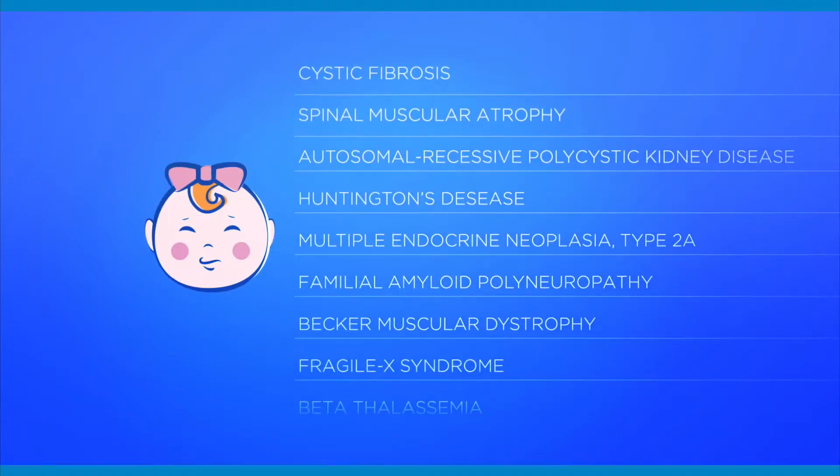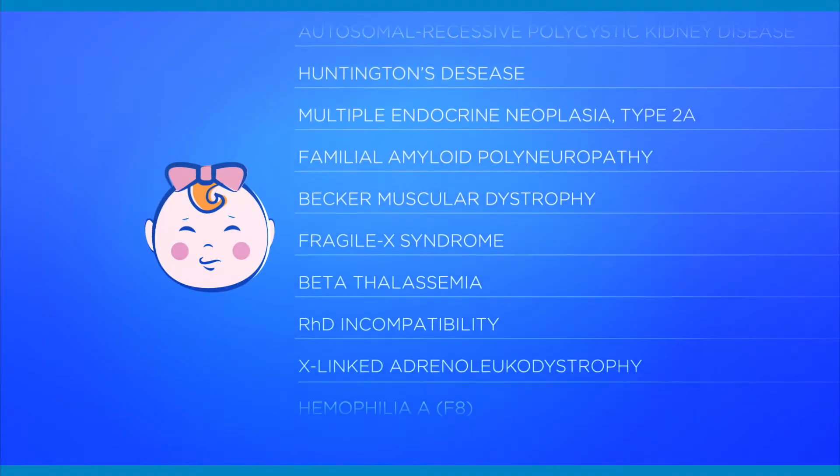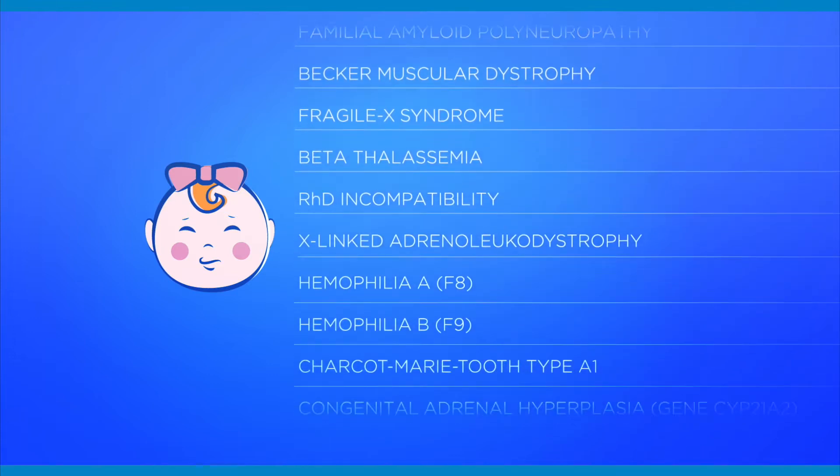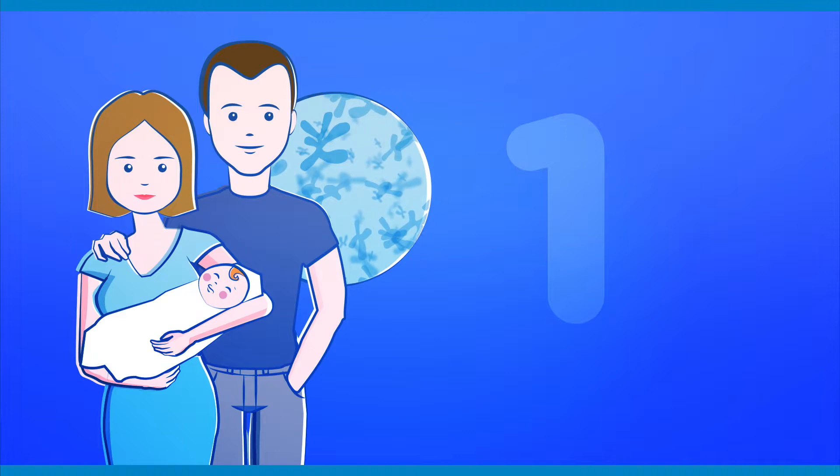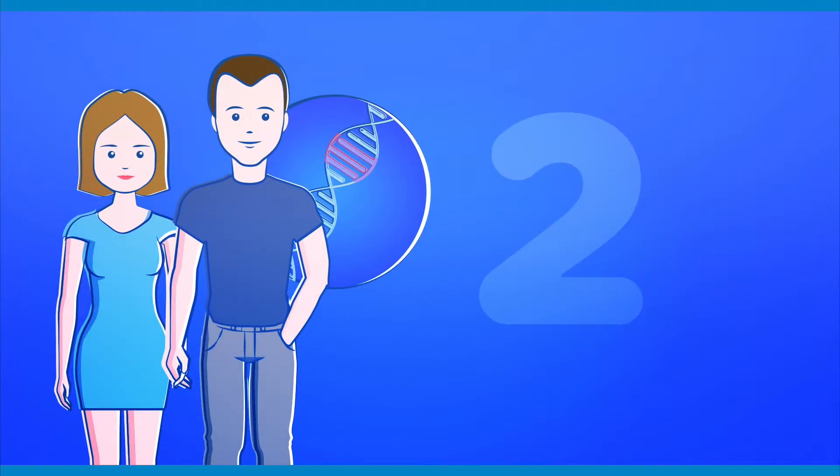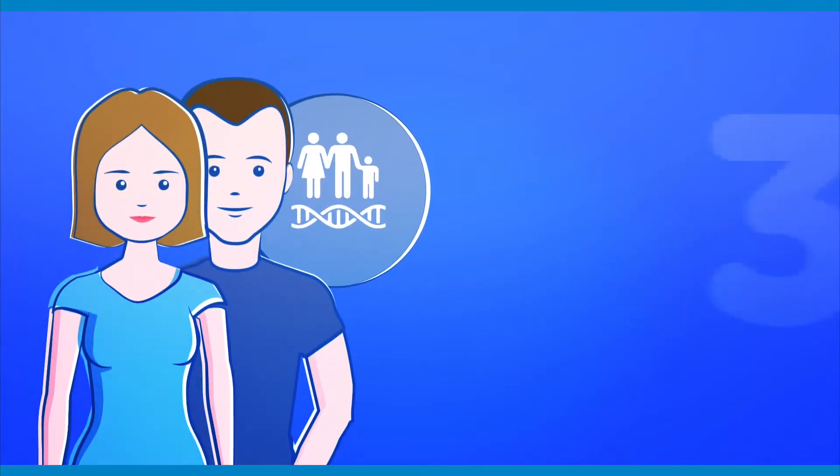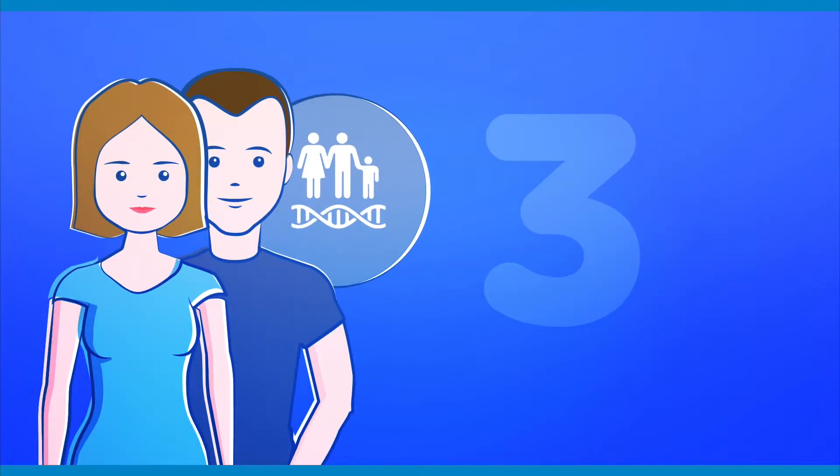There are several factors which increase the risk of transmitting a specific genetic disease to the future baby. If the prospective parents already have a child affected by a specific genetic disease, if the parents are carriers or have been diagnosed with one of these diseases, or in case of family history of a genetic syndrome.